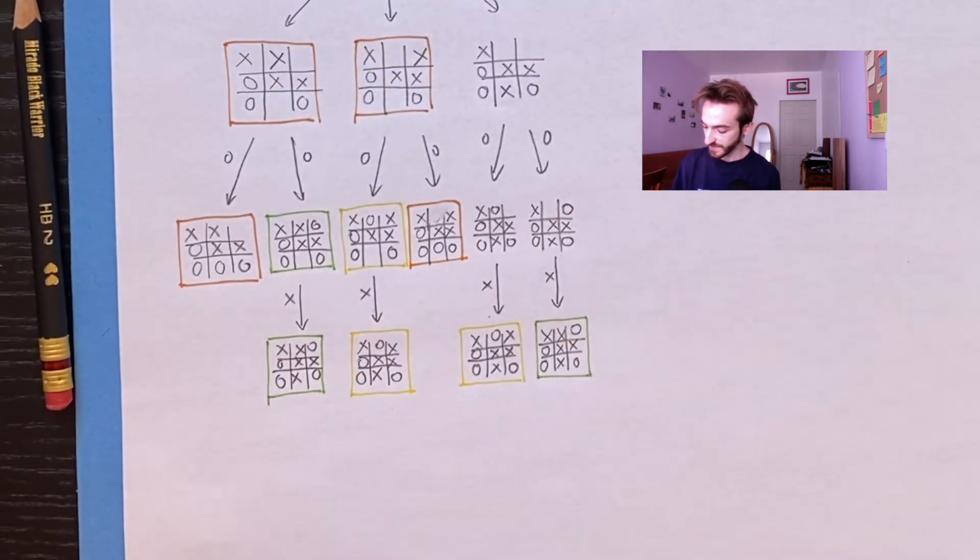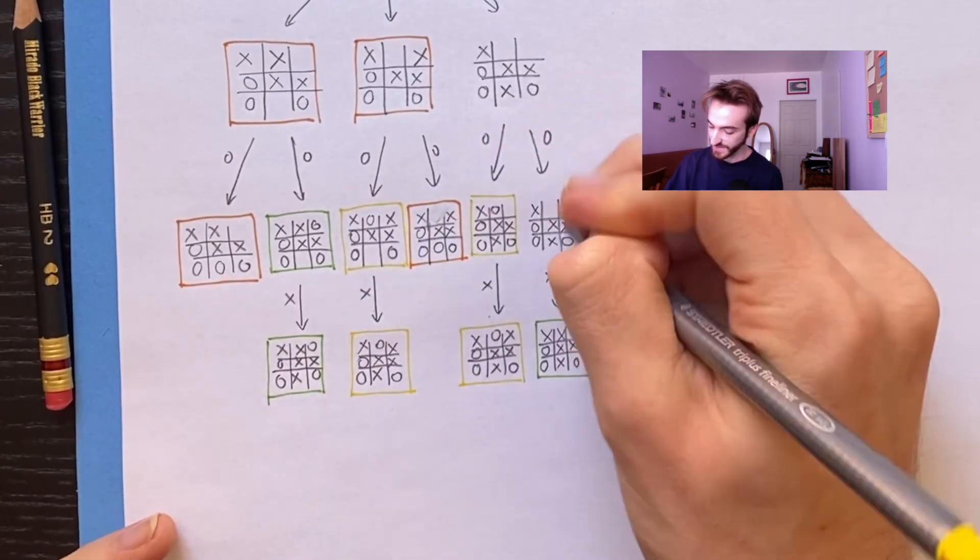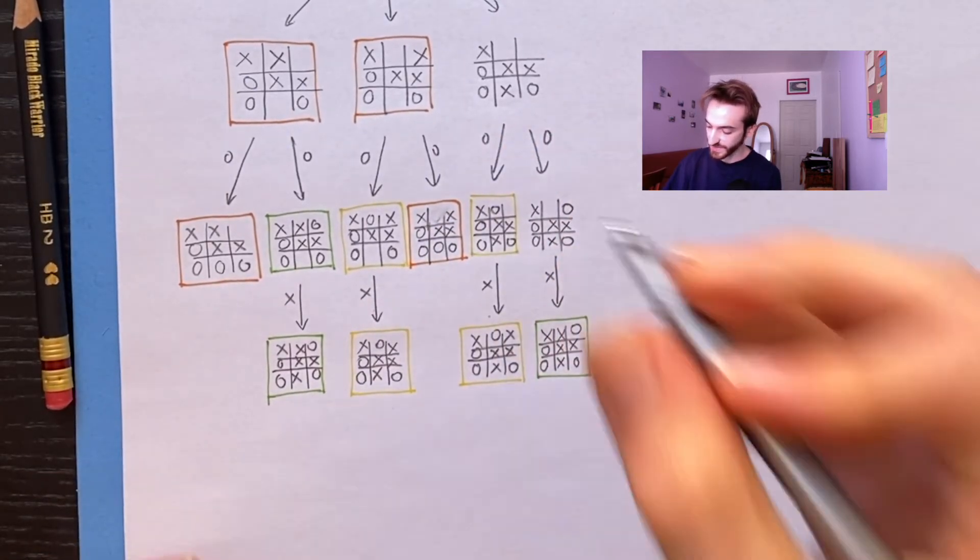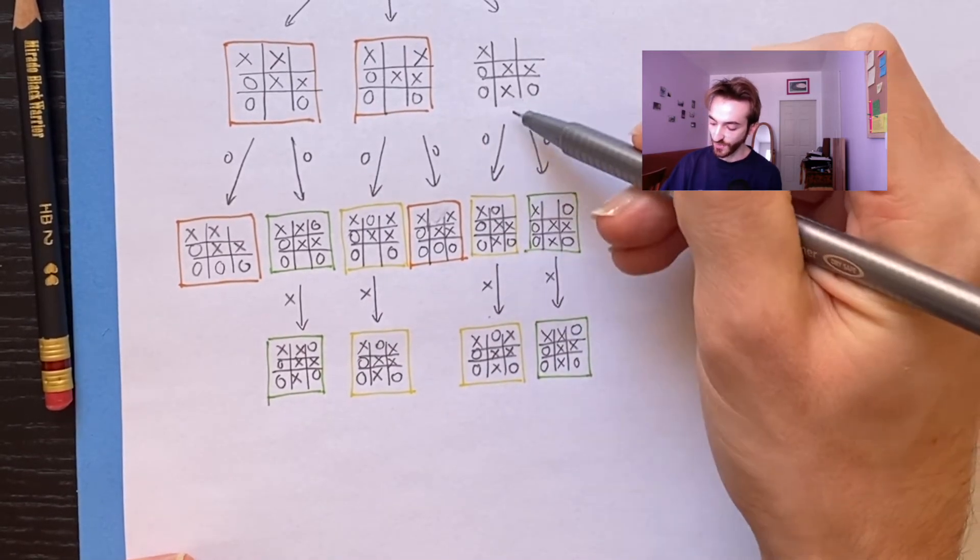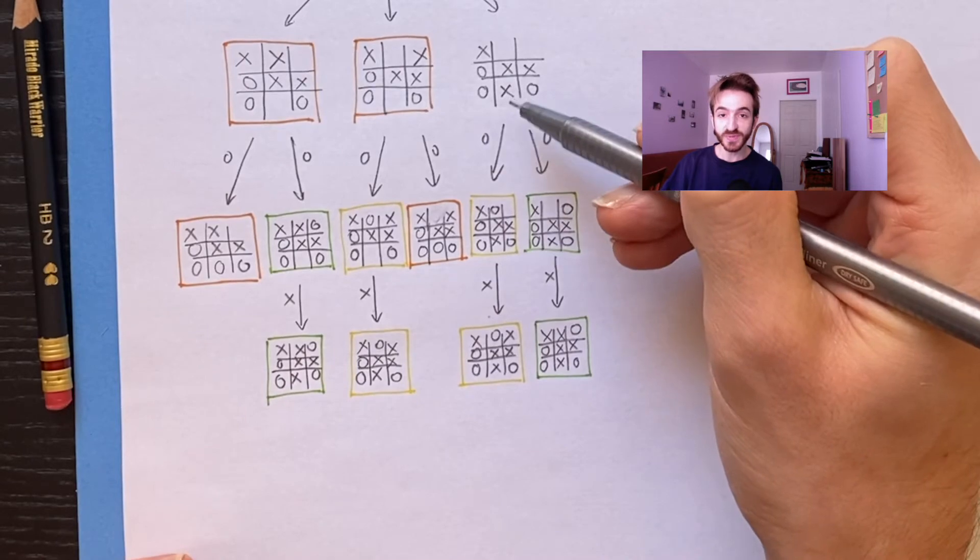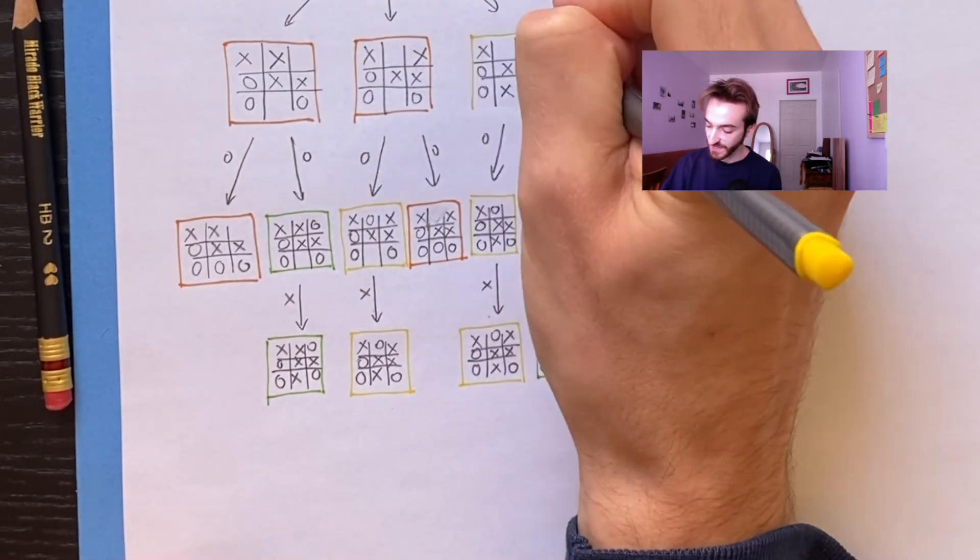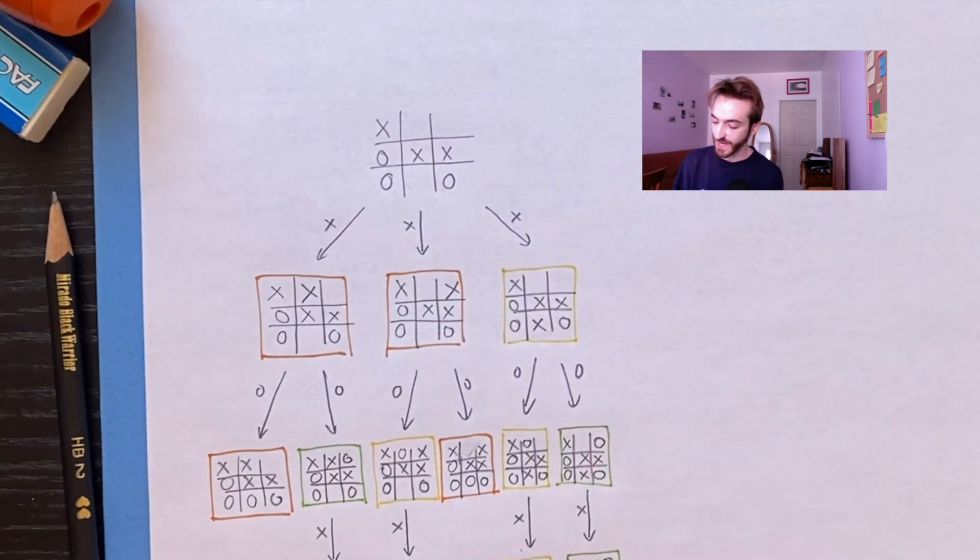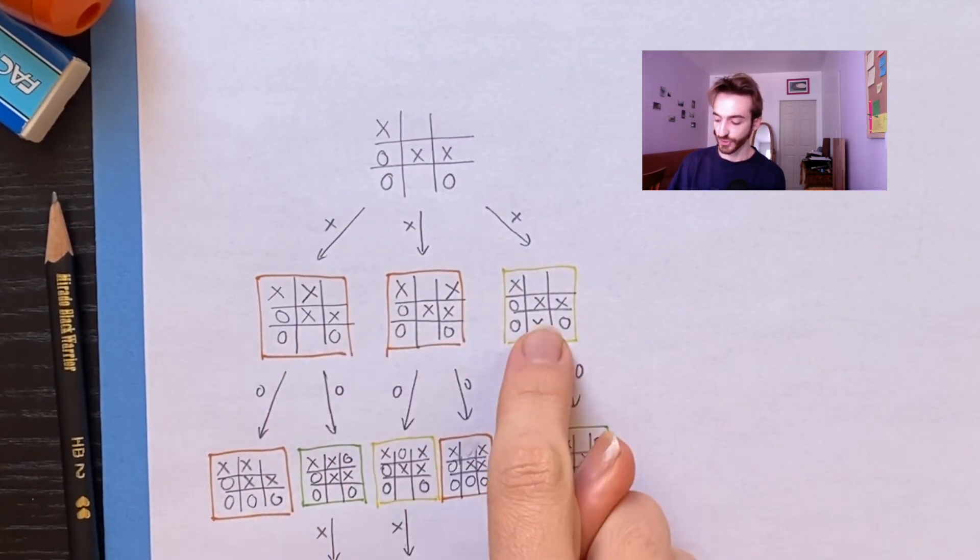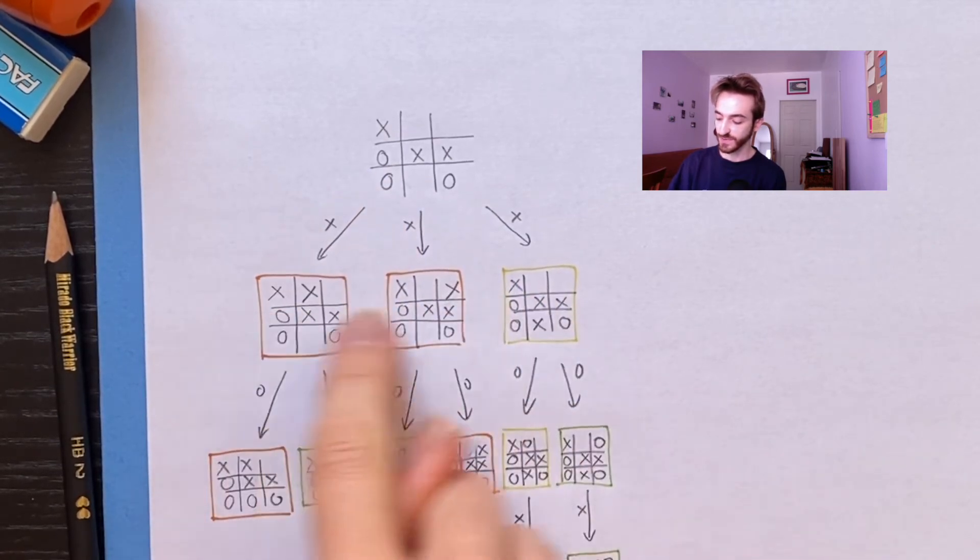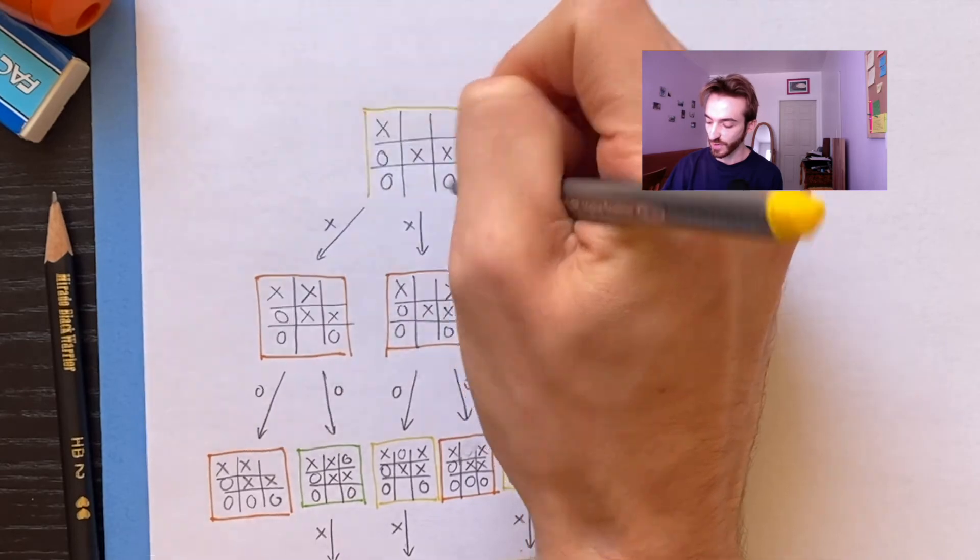Here, X has to play a draw. That makes this a draw position. Here, X can play a win. That makes this a win position for X. Now, if O is choosing between a draw and a win for X, O is going to pick the draw. And so finally, we work our way up to the top of this tree, and X has three options: a win for O, a win for O, or a draw. X is going to, between those three options, pick the draw. So this position is a draw with best play.